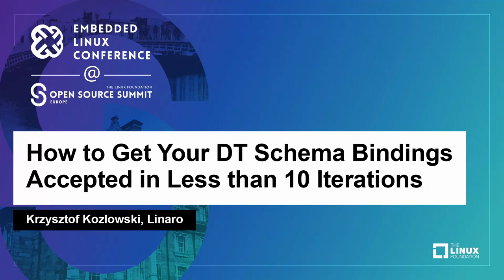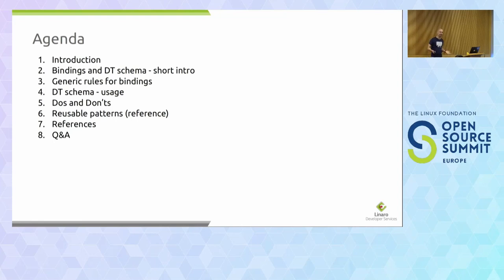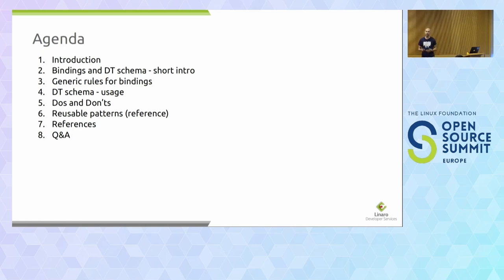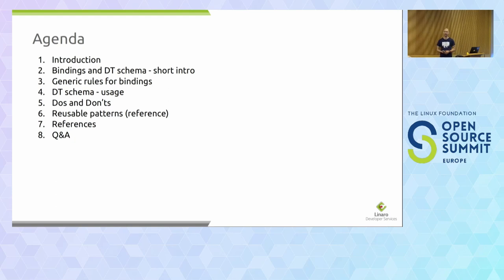I'm Krzysztof Kozolski. This presentation is about device tree bindings in the Linux kernel. I will shortly talk about the bindings — the expectation is that you know a bit about device resources and bindings. The core will be about the new format of Linux kernel bindings, the DT schema. The core of the presentation is do's and don'ts — tricks which will reduce my review time. This is purely a selfish presentation: I hope I will review less and faster the submissions of people who want bindings in the kernel.